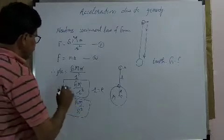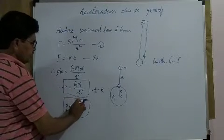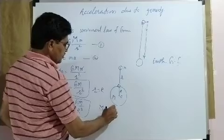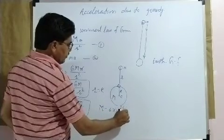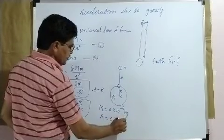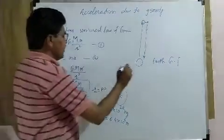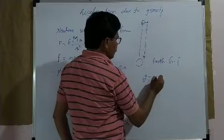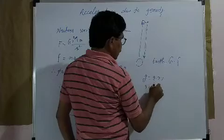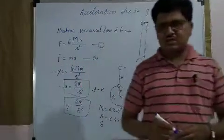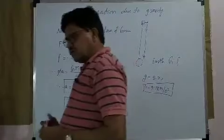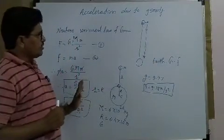When we put in the values of the universal gravitational constant, mass of the earth, and radius of the earth — the mass of the earth is equal to 6 multiplied by 10 to the power 24 kilograms and the radius of the earth is 6.4 into 10 to the power 6 meters — the value of the acceleration due to gravity is equal to 9.77 or 9.78 meters per second squared. Acceleration due to gravity is a vector quantity, but the value of g on the surface of the earth is different for different places, which we will discuss in the next chapter.